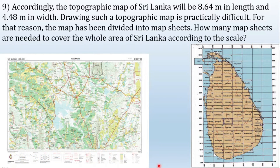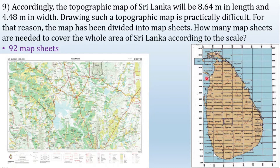Accordingly, the topographic map of Sri Lanka will be 8.64 meters in length and 4.48 meters in width. Drawing such a topographic map is practically difficult, so the map has been divided into map sheets. How many map sheets are needed to cover the whole area of Sri Lanka according to the 1:50,000 scale? 92 map sheets. The whole of Sri Lanka has been divided into 92 map sheets, as you can count from the grid shown.